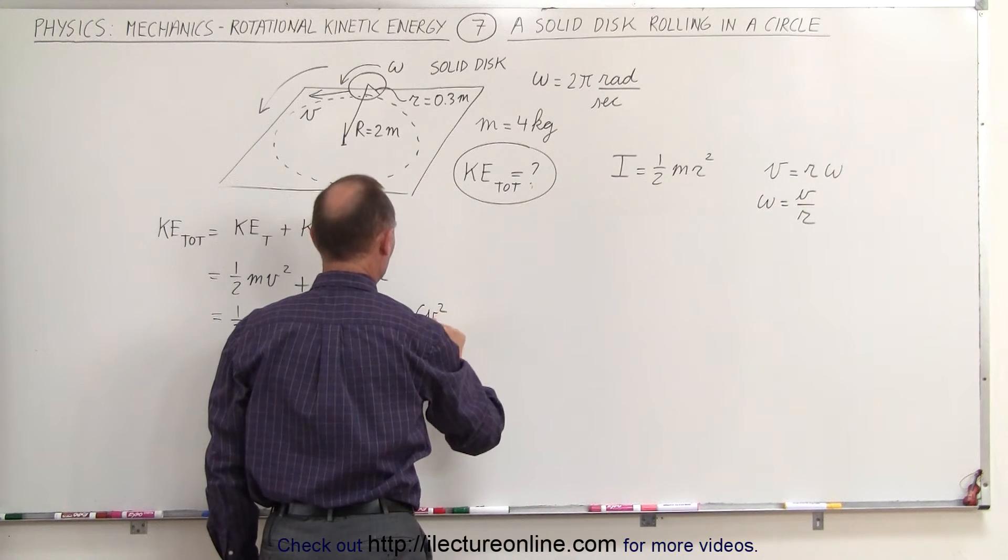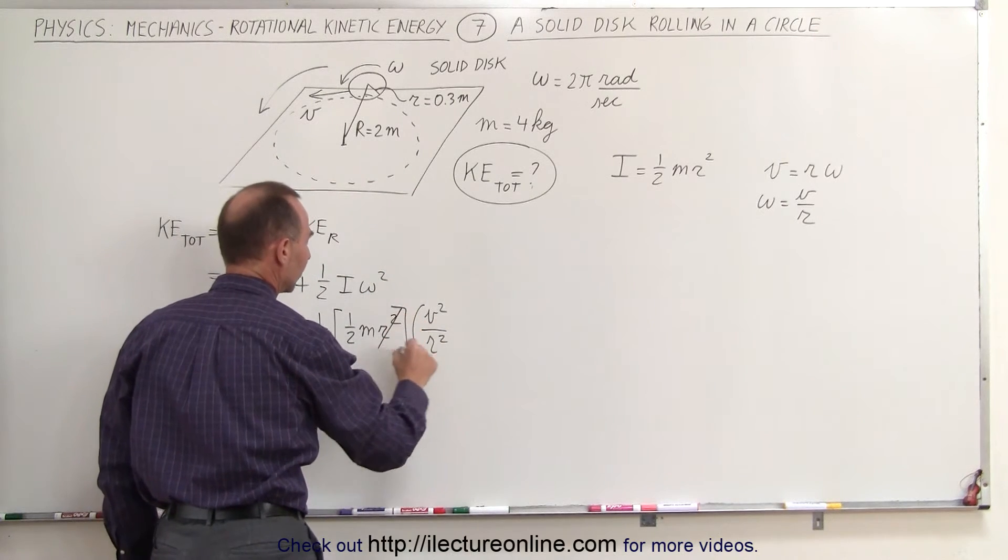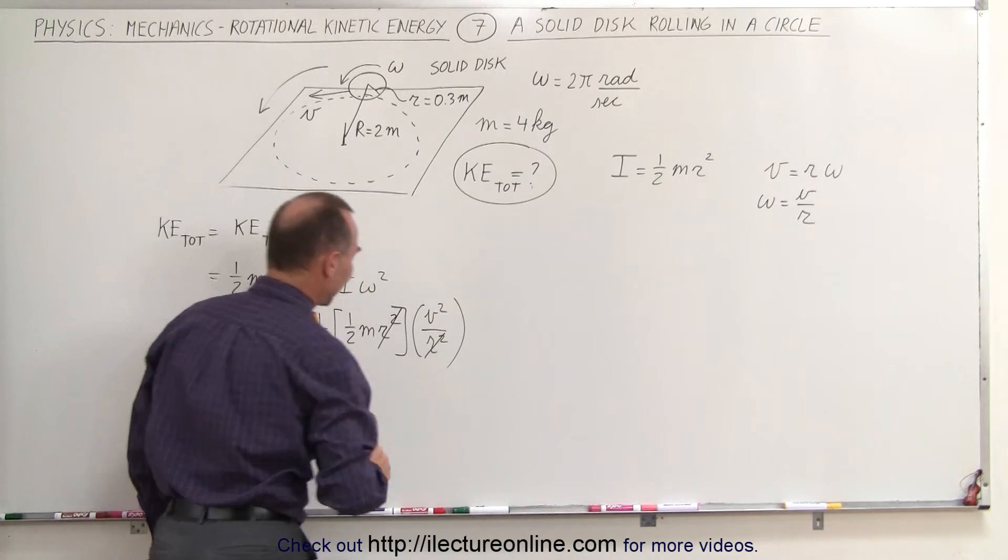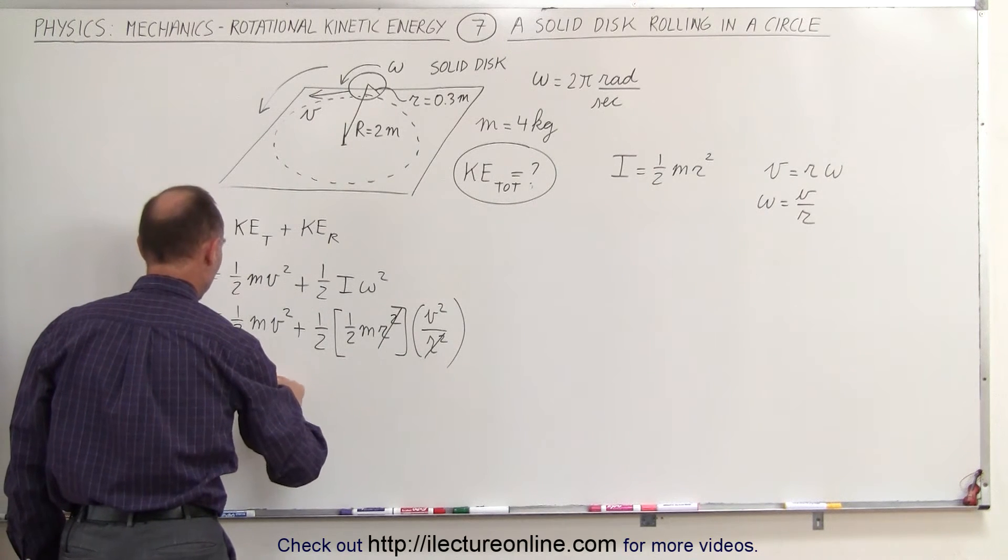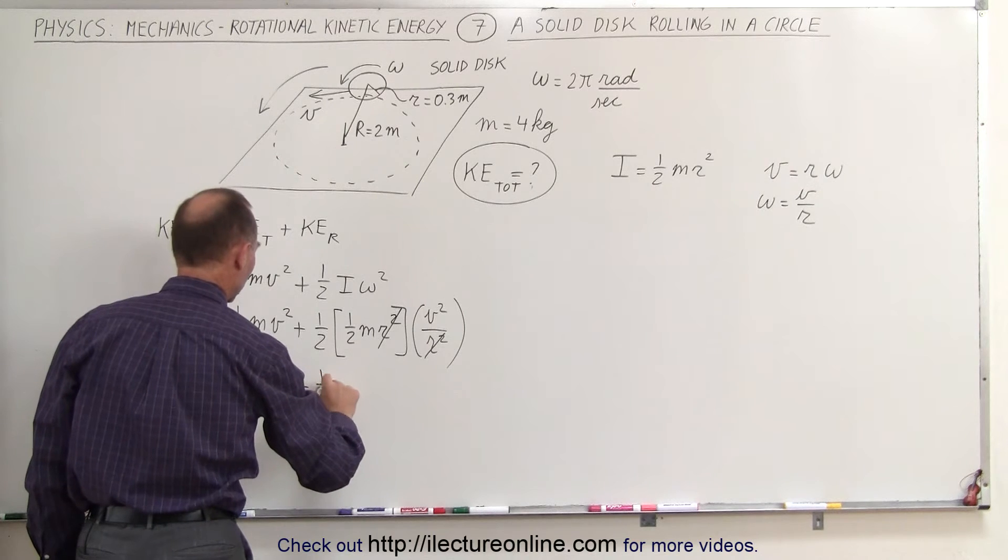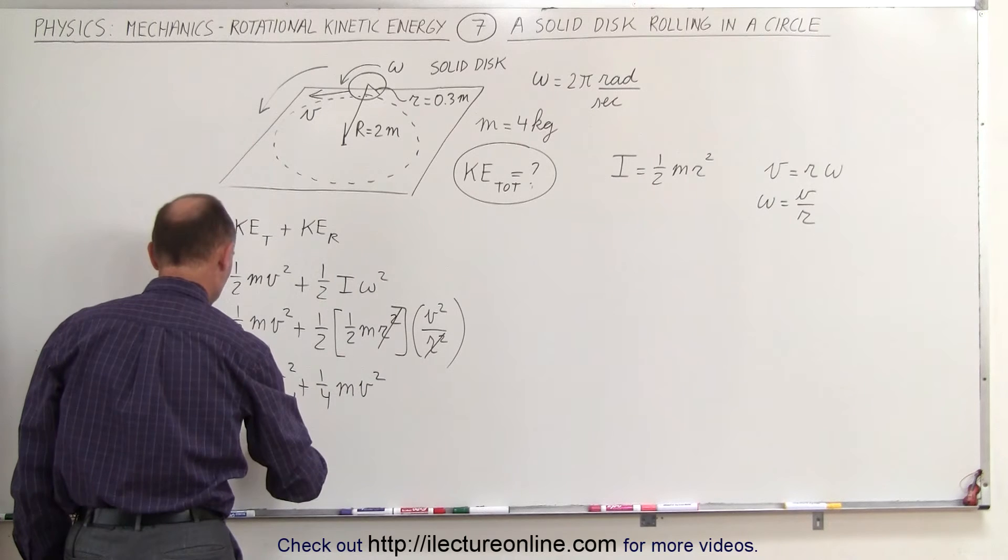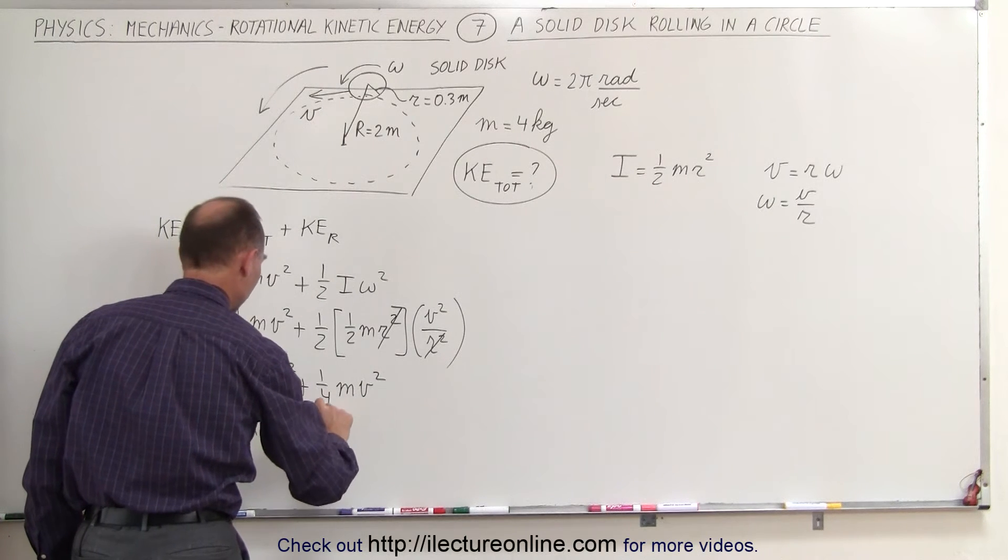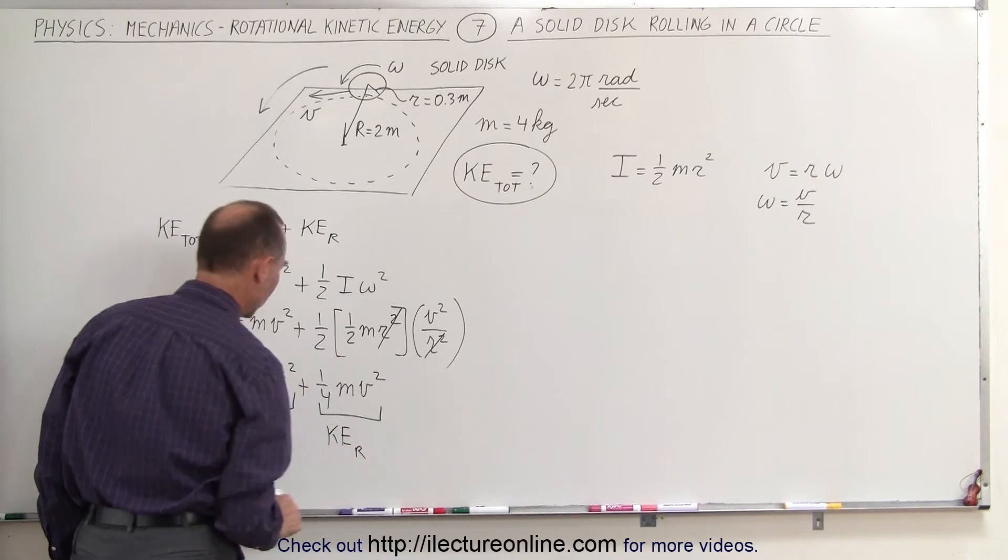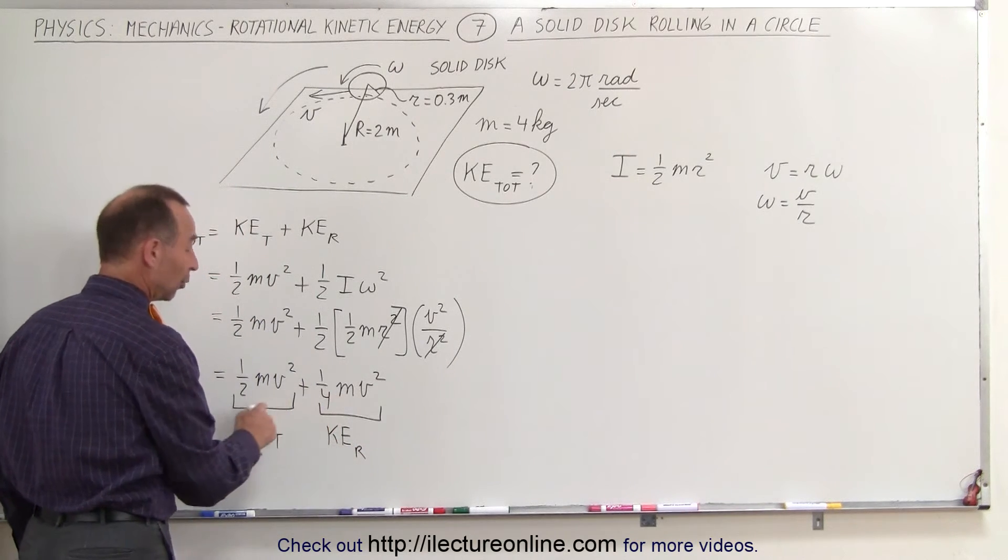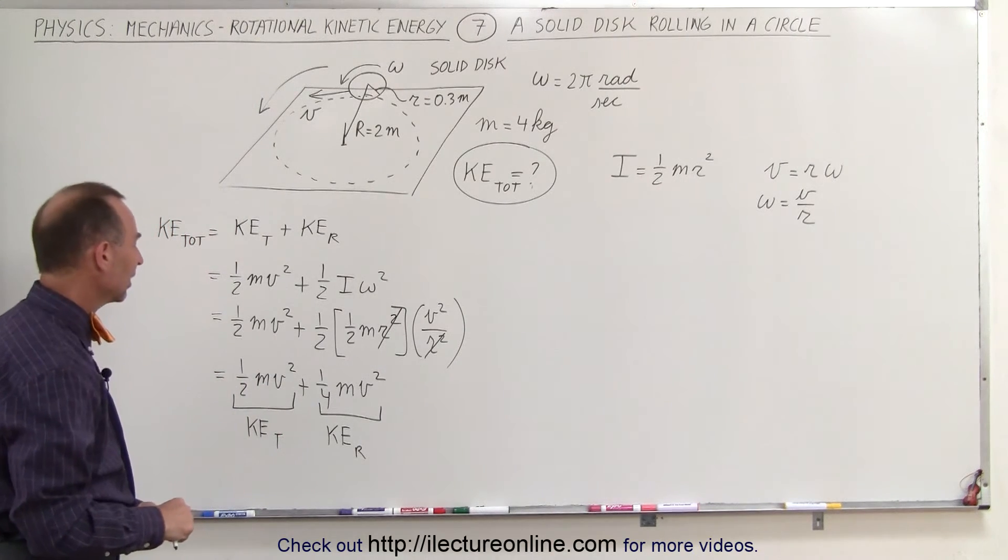This can then be written as v squared over small r squared. Notice that the radius of the disk then gets canceled out, which means that this is now equal to 1/2 times mv squared plus 1/4 mv squared. This portion right here is the translational kinetic energy, and this portion right here is the rotational kinetic energy. Notice that the rotational kinetic energy is exactly half compared to the translational kinetic energy.